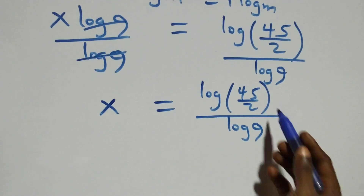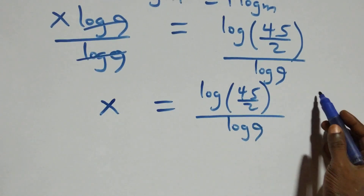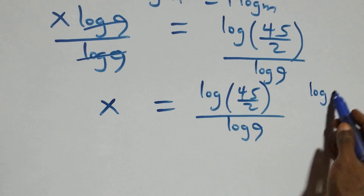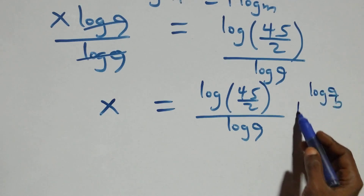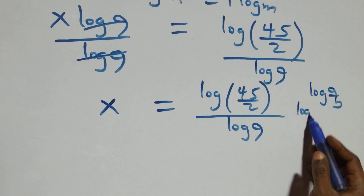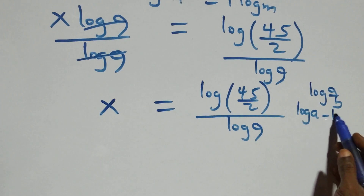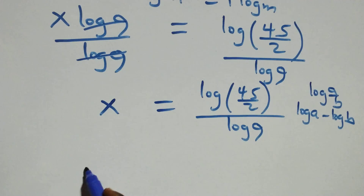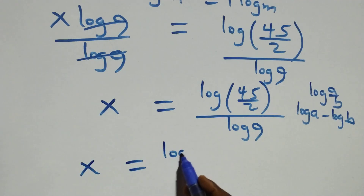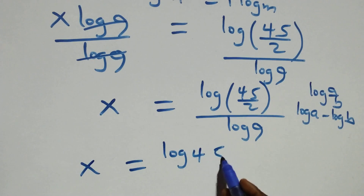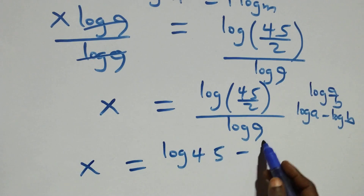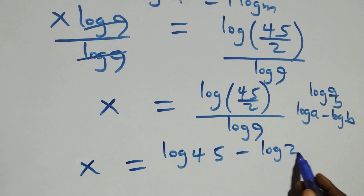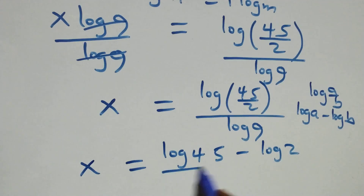Then, this follows from the log quotient rule. When we have log(a over b), it is the same thing as log a minus log b. So what we have here becomes x equals to log 45 minus log 2, all over log 9.